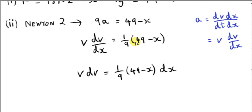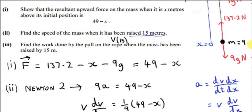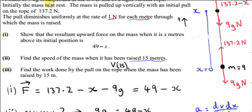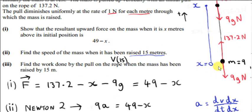Like all the equations we cover, this is a separable differential equation. We multiply both sides by dx, with v on one side and x on the other, then integrate both sides using definite integrals. The initial speed is 0 — the particle starts from rest — and that corresponds to x equals 0. So the lower limits are v equals 0 and x equals 0.